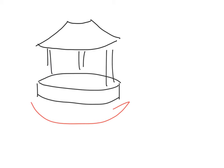To think about angular velocity vectors, let's first think about a merry-go-round. Imagine you have a merry-go-round and it's rotating counterclockwise as seen from above, with a rate omega equal to dθ/dt. That's the angular rate at which it's rotating.